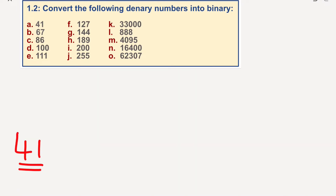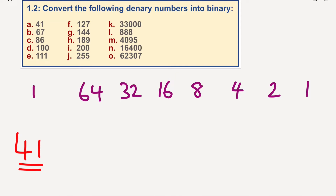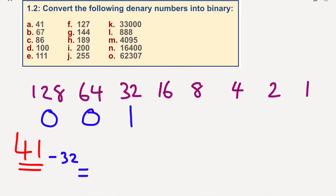I'm going to draw a number line: 2, 4, 8, 16, 32, 64, 128. Does 128 go into 41? No. Does 64 go into 41? No. Does 32 go into 41? Yes it does. So I'm going to remove 32 from 41 and I should get 9 left. Does 16 go into 9? No.